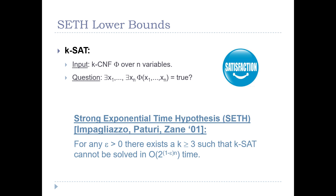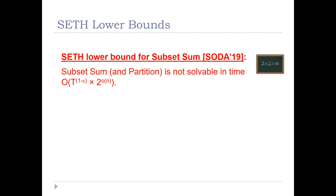As a reminder, SETH is concerned with k-SAT — determining whether a k-CNF formula over n variables is satisfiable. The Strong Exponential Time Hypothesis states that for any epsilon greater than 0, there exists a k >= 3 such that k-SAT cannot be solved in O(2^{(1-epsilon)*n}) time. In prior work, a reduction from k-SAT to subset sum provides a tight lower bound for subset sum under SETH.